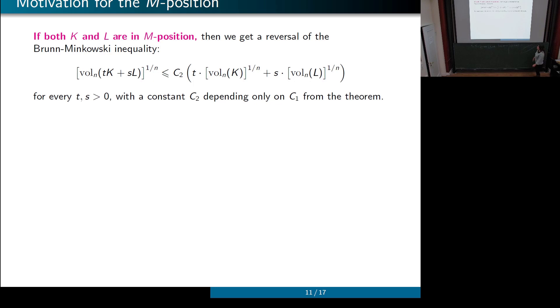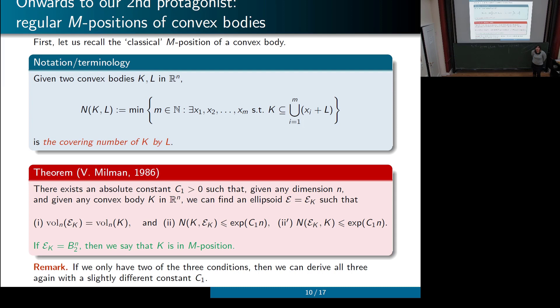A question from the audience: does 'absolute constant' mean it's irrespective of dimension? Yes, exactly — it doesn't depend on anything, including dimension. One could make the constant a hundred or a billion and still be fine; it's dimension-independent.